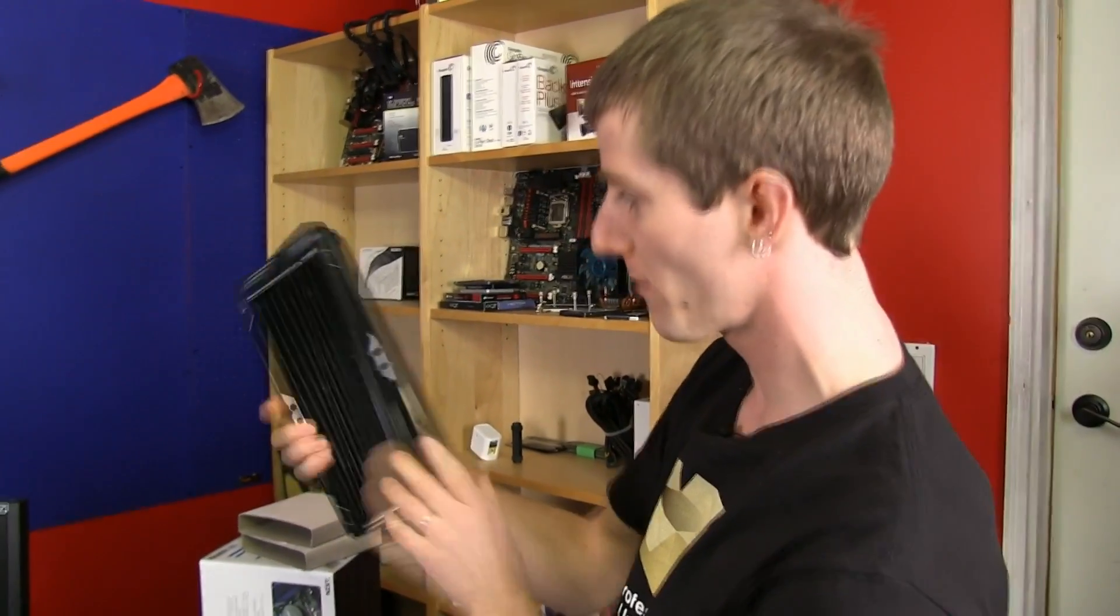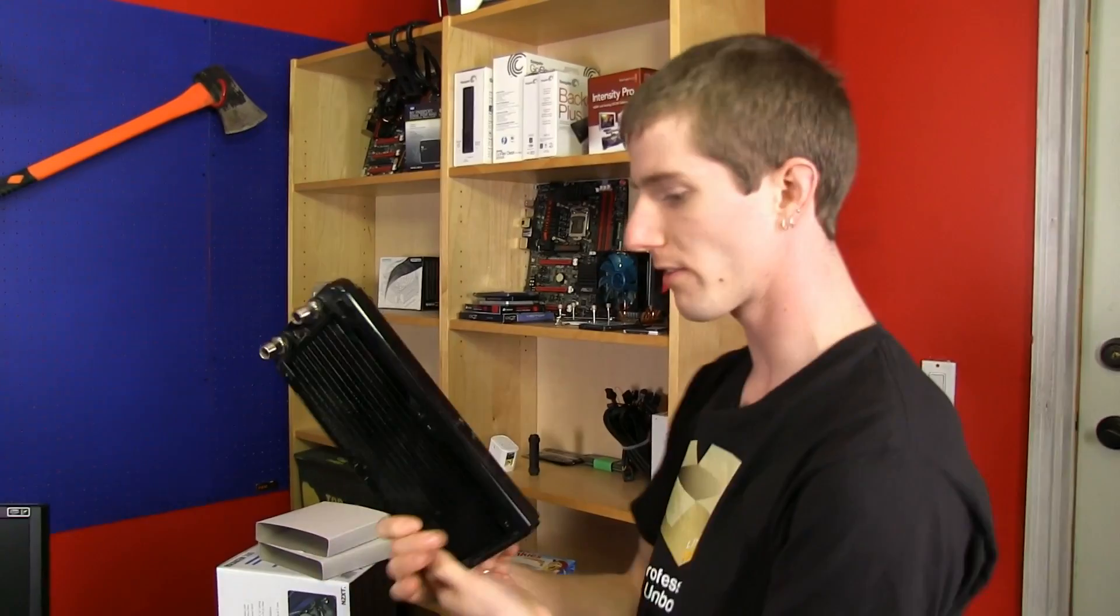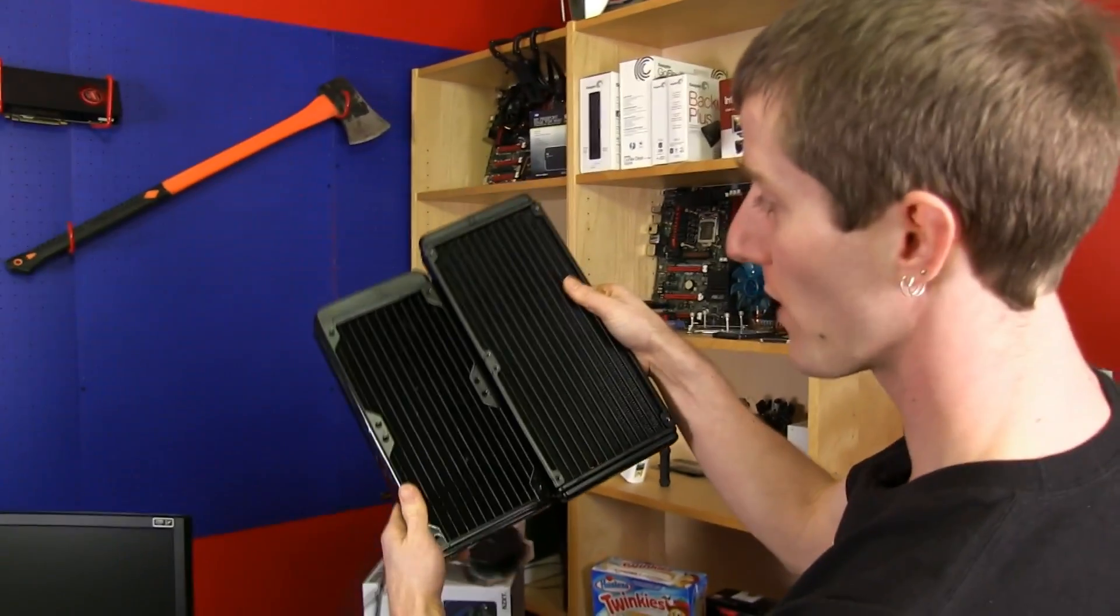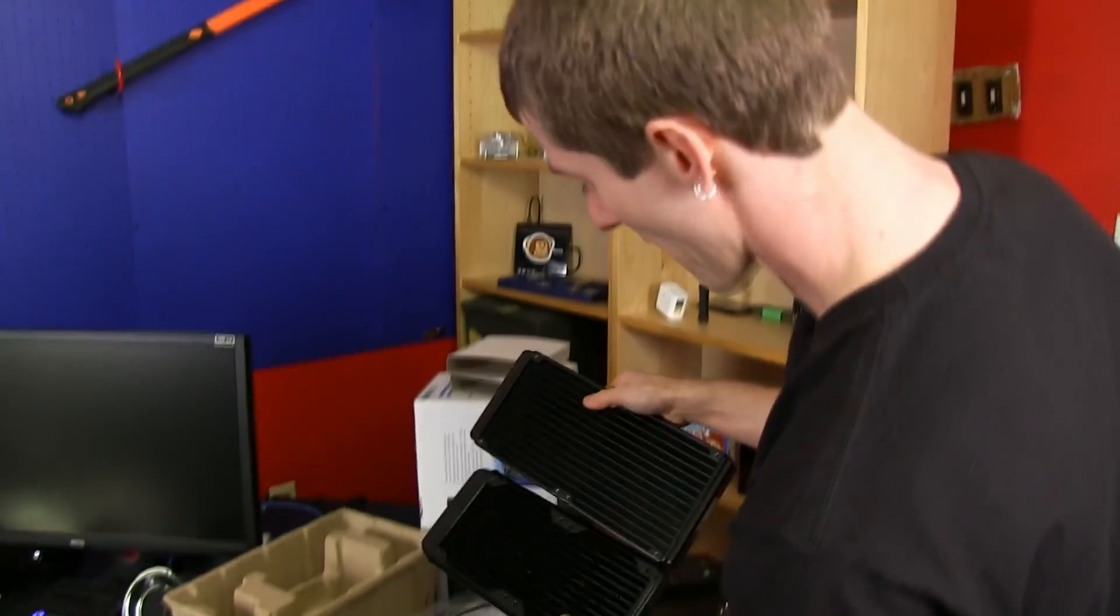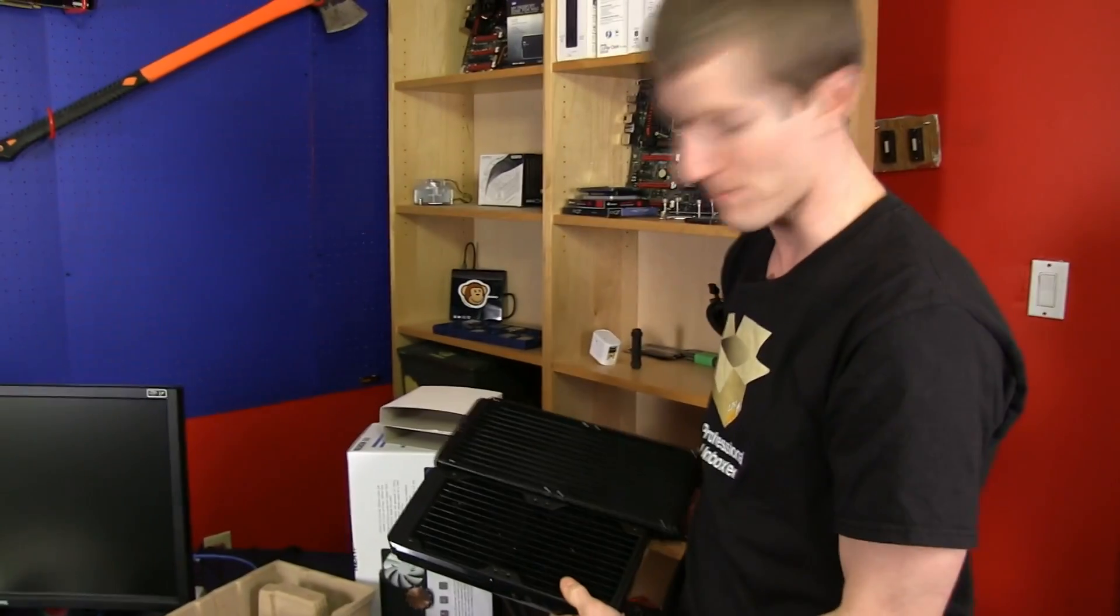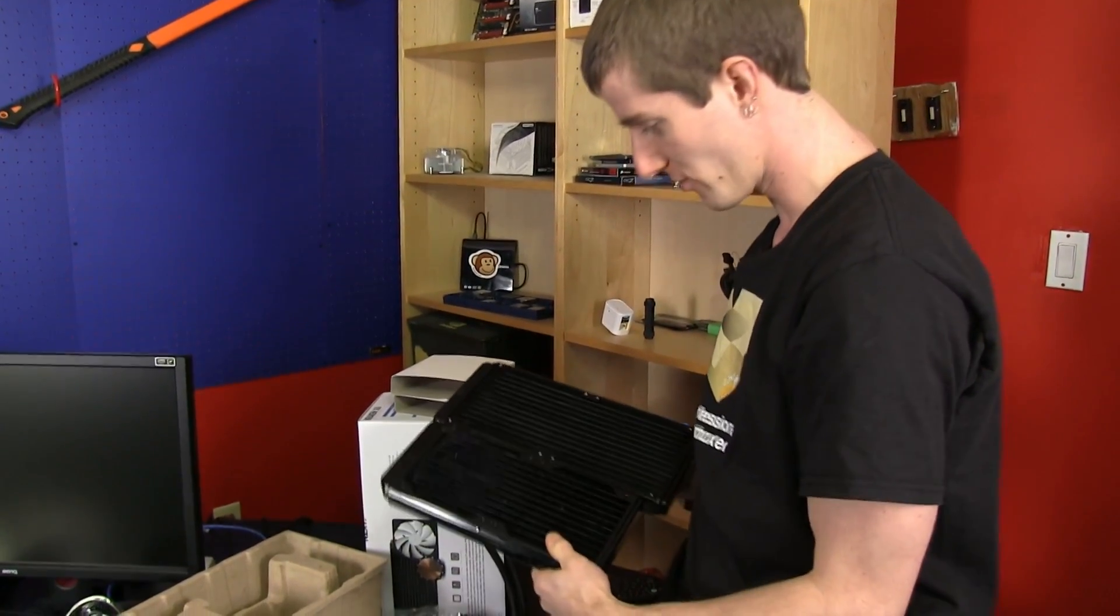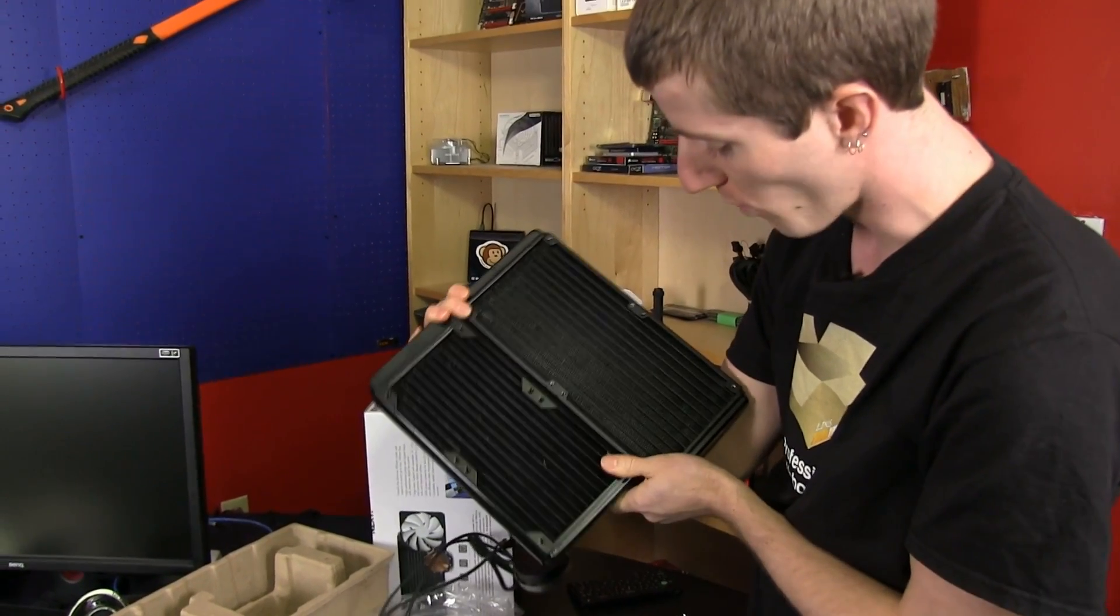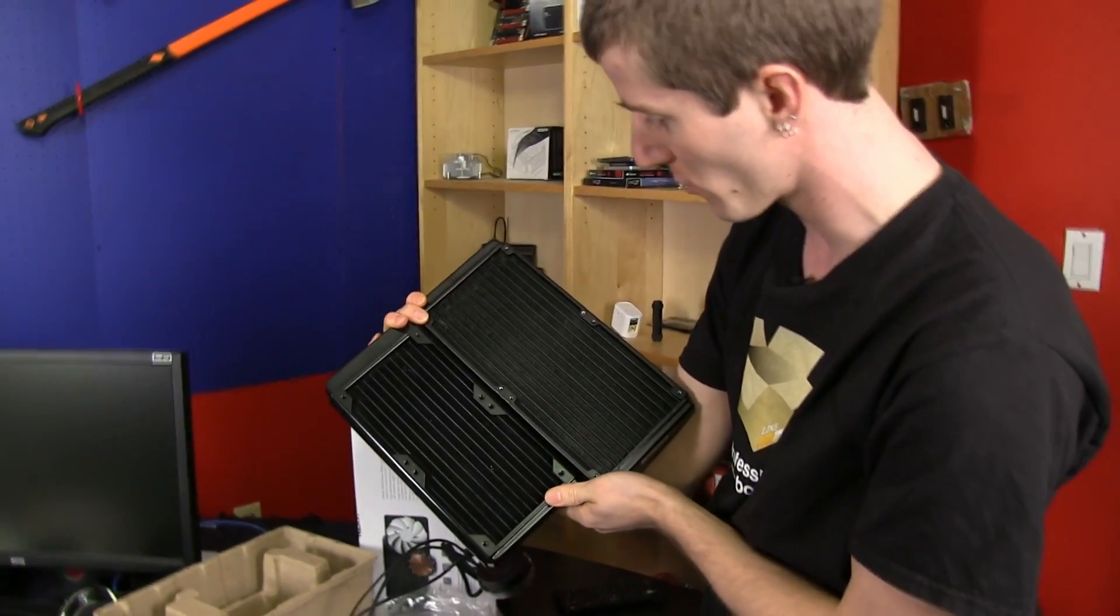And I found one. So holding it up next to sort of my old beat up, this is actually the first water cooling radiator I ever bought. This is a GT Stealth 240. So holding it up against that, it's all fine and good to show you guys this in terms of graphics, but when you actually hold them up next to each other, you can see that the sheer scale of the dual 140mm radiator dwarfs the scale of a dual 120mm radiator.